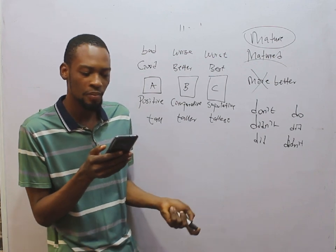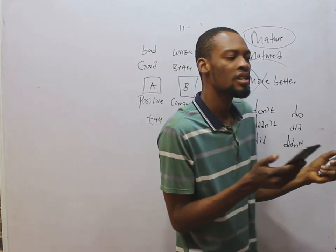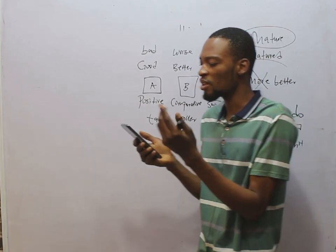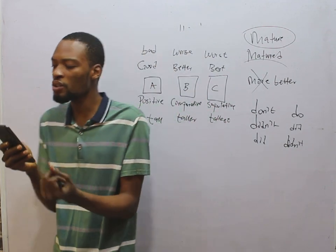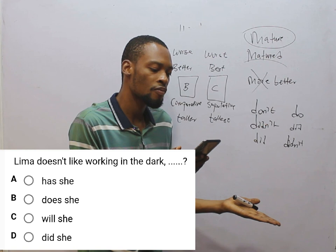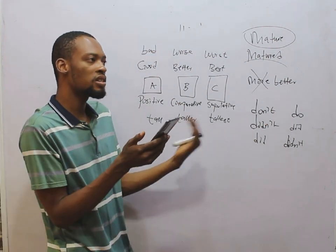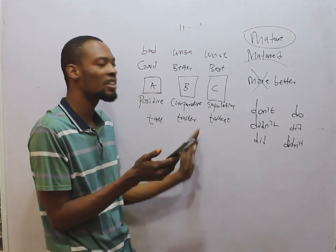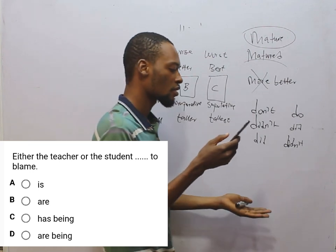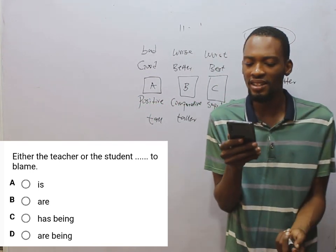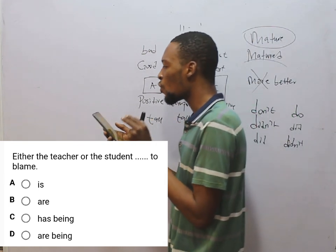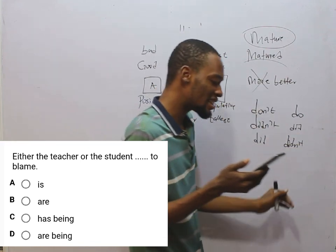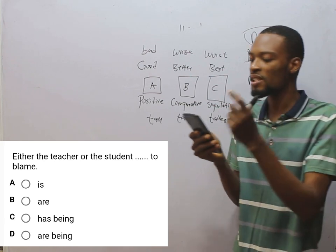Limo doesn't like walking in the dark — question tag. The statement is negative, so the answer will be positive: does she? Option B is correct — Limo doesn't like wandering in the dark, does she? Either the teacher or the student dash dash to blame. Either or simply means one of them, and when we are talking about one, you use is: either the teacher or the student is to blame.